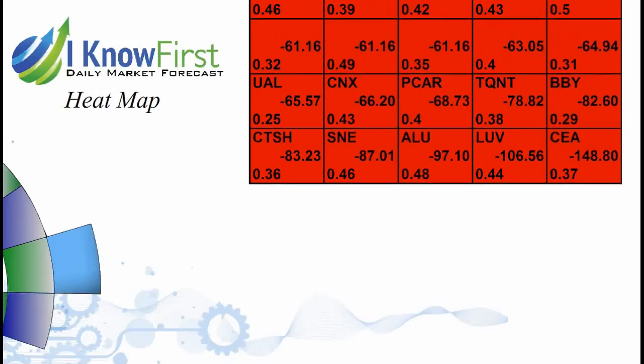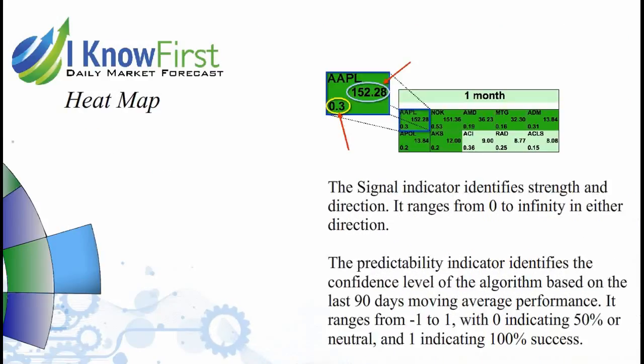The signal indicator identifies strength and direction. It ranges from 0 to infinity in either direction.